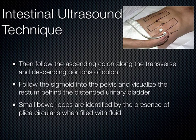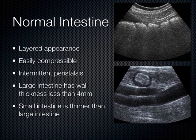Differentiating small bowel from large bowel is difficult with air-filled loops in normal individuals, but in disease states you can really make out the plique circularis. This is normal intestine — this is what we expect to see: a layered appearance that is easily compressible.